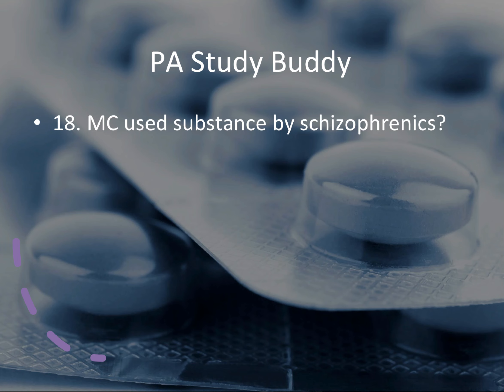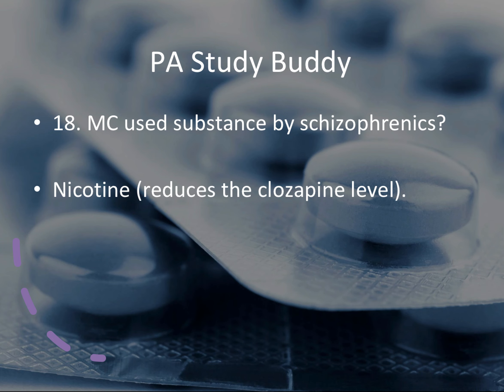Question eighteen: most common substance used by schizophrenics? The answer is nicotine — schizophrenic patients love to smoke. A follow-up question: if a schizophrenic patient is smoking, which medication could be affected? Again, it's clozapine. When you smoke, it reduces the clozapine level. That's something you need to tell the patient and know for your test: schizophrenics, clozapine, nicotine affects the clozapine levels.